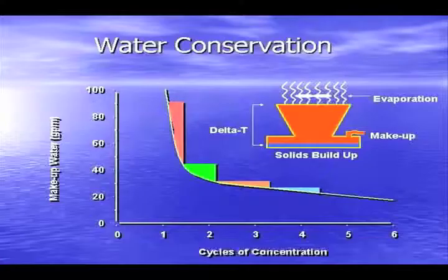One of the topics I'm going to spend a couple slides on is what we call concentration ratio, or cycles of concentration. The more you can concentrate that water — because steam is leaving the tower at the top, so all the minerals stay behind — the more you can cycle that up, the less water you're going to use. And it's pretty drastic.